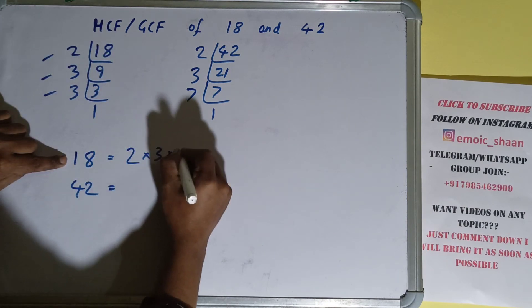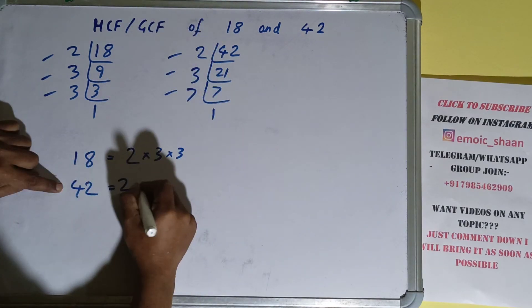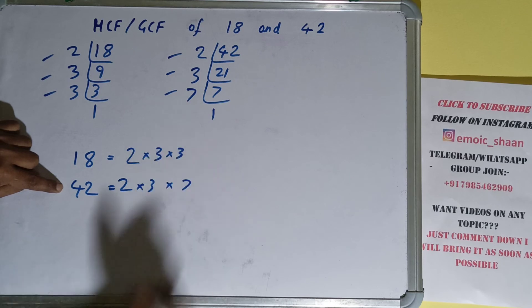For 42, what prime factors do we have? 2, 3, 7.